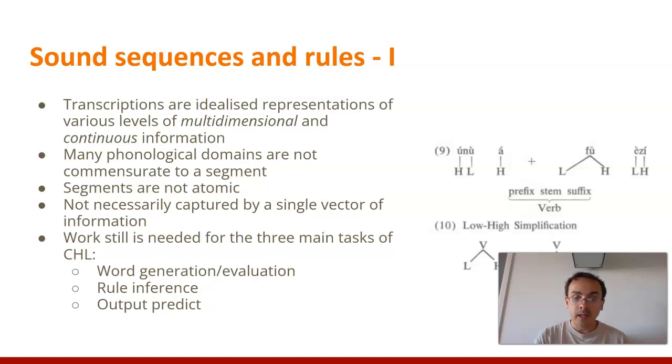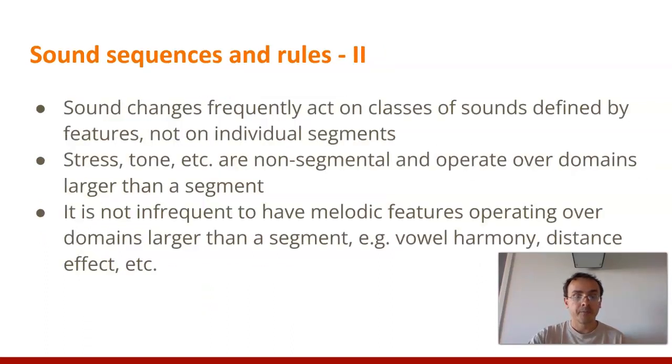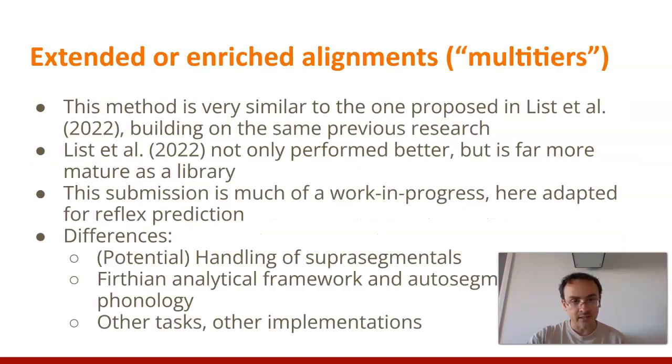Work is still needed for the three main tasks of computational historical linguistics, which would be word generation evaluation, rule inference, and output prediction, which is the one we're having. Another important part is that sound changes frequently act on classes of sounds defined by features and not individual segments. Stress and tone, which are the most famous non-segmental properties, operate over domains that are larger than a segment, so an alignment might not be able to capture that. It's not infrequent to have melodic features operating over domains far larger than segments, such as vowel harmony, distance effect, and similar.